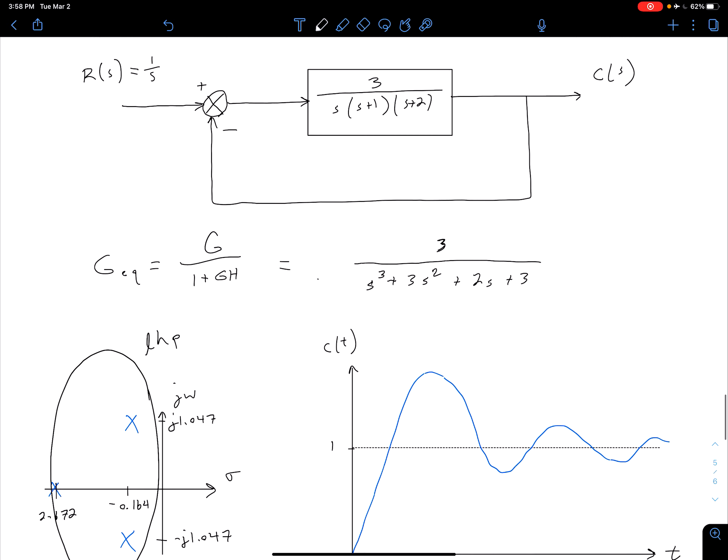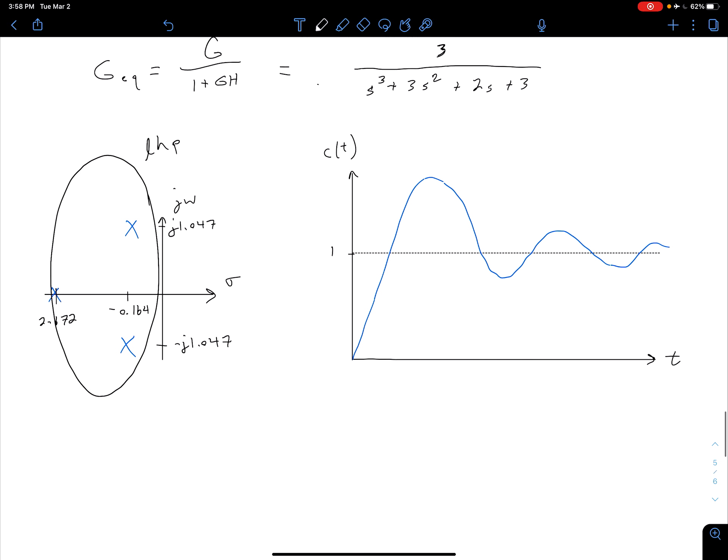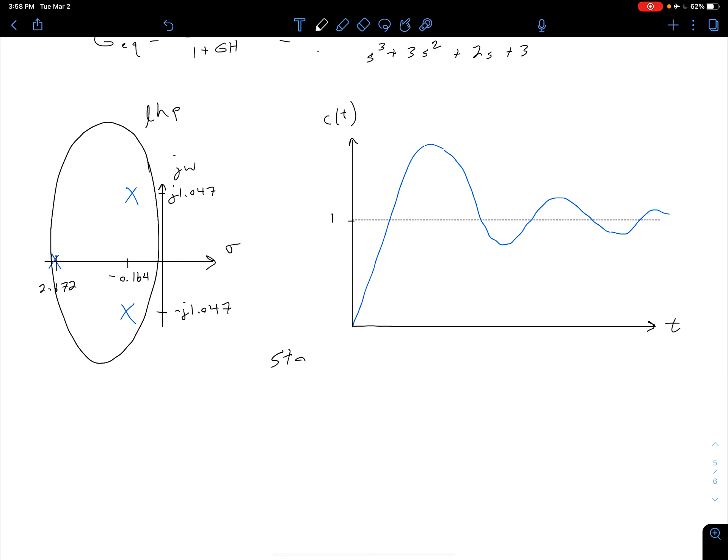So now let's say we use this same system but we just come in here and we adjust this gain value a little bit. So instead of having a 3 we change that value to a 7. And so before we do that let's just make a note here explicitly that this system was stable.